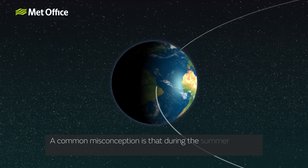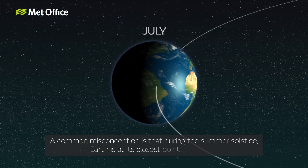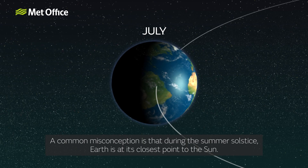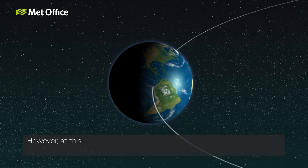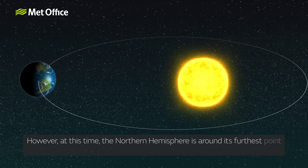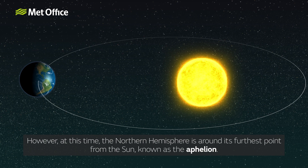A common misconception is that during the summer solstice, Earth is at its closest point to the Sun. However, at this time the northern hemisphere is around its furthest point from the Sun, known as the aphelion.